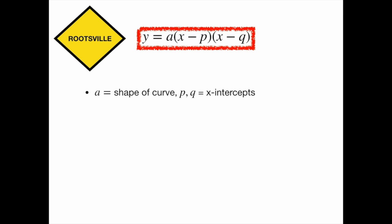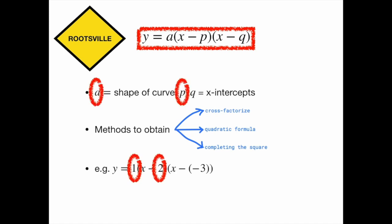Roots are helpful when your quadratic function disassembles into common and closed linear brackets. To get here from General Town, there are usually three paths: cross-factorize, quadratic formula, or completing the square. In this case, the A value indicates the shape of the curve and the roots 2 and negative 3 can be read off like so.